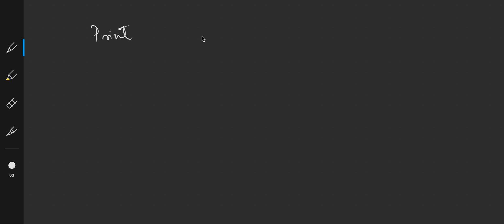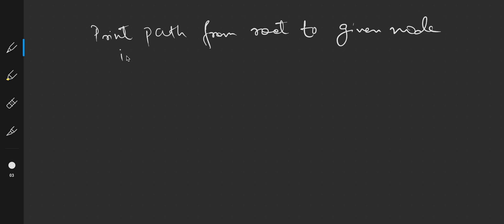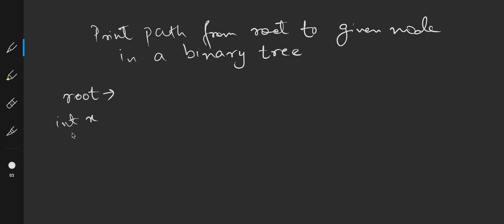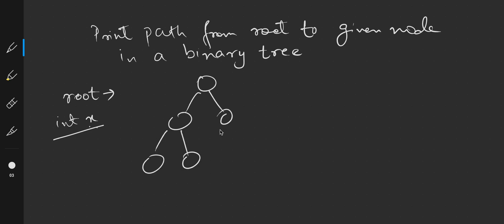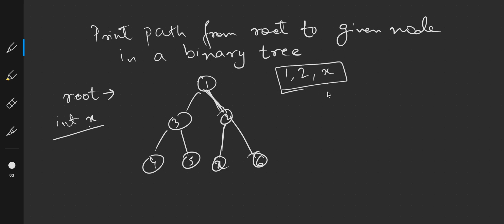Today we will solve the problem to print path from root to a node in a binary tree. We will be given a pointer to the root of the tree and an integer X. Wherever the node X is in the tree, we have to print the path from root to node X. For example, with nodes one, two, three, four, five, six, and X, the output will be one, two, X — returned as a vector.